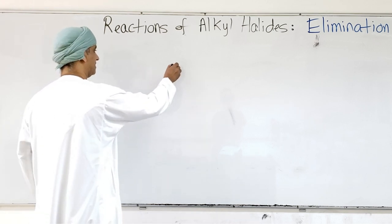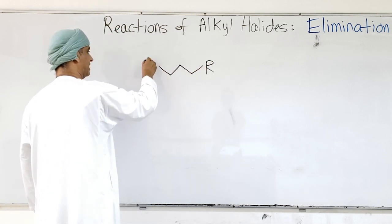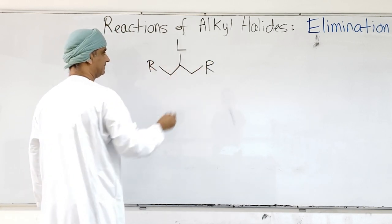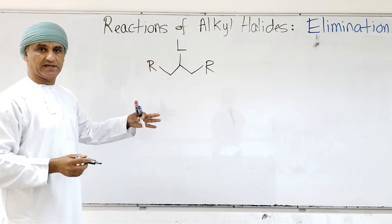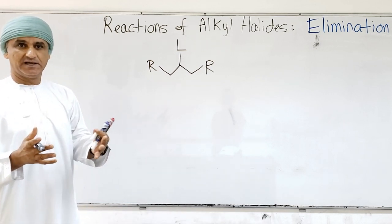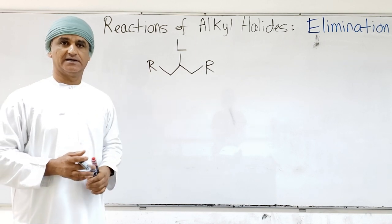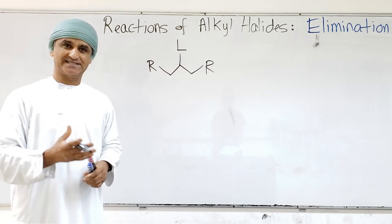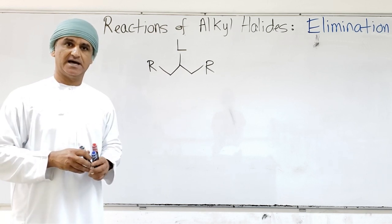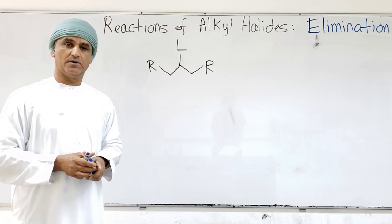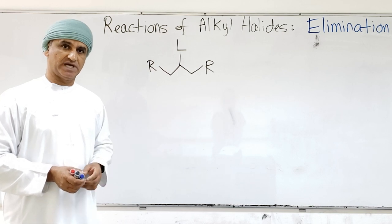This is the general structure of an alkyl halide, or a substrate in general, that has a leaving group. L could be X, by the way. L is a more general representation of a leaving group, because then tosylates, as excellent leaving groups, can now be included. Tosylates are an excellent type of leaving groups in substitution reactions and in organic chemistry reactions in general.